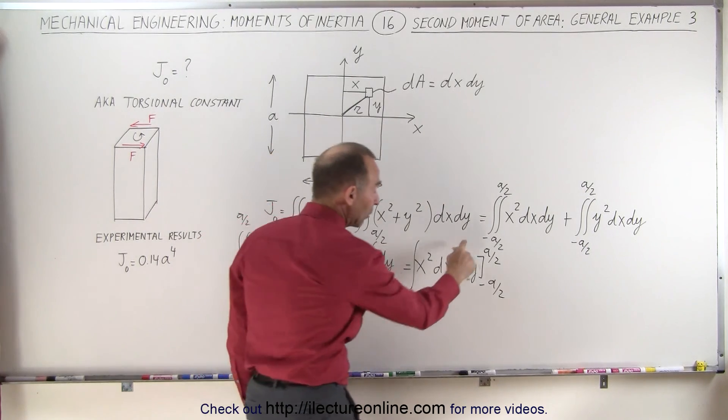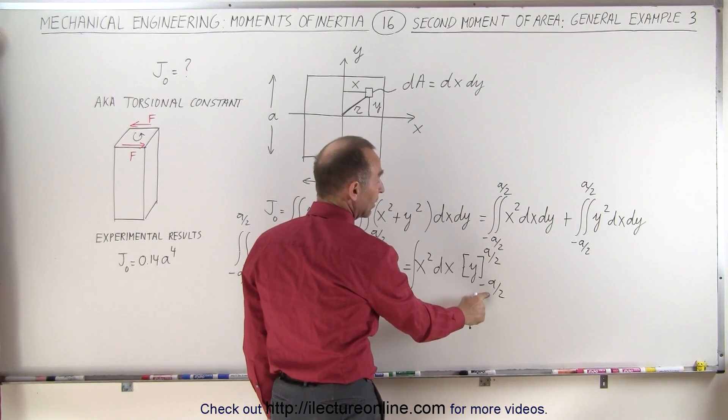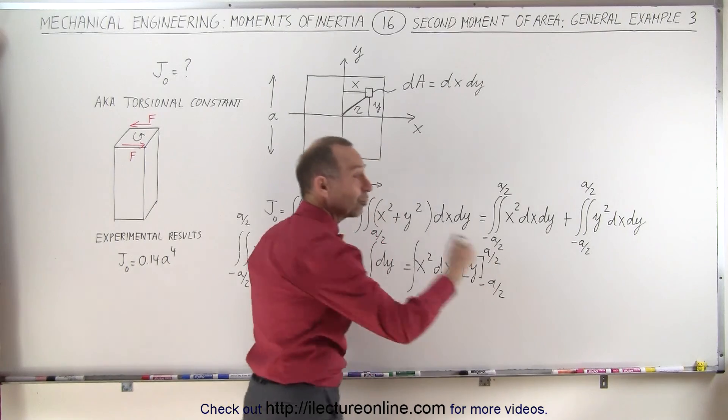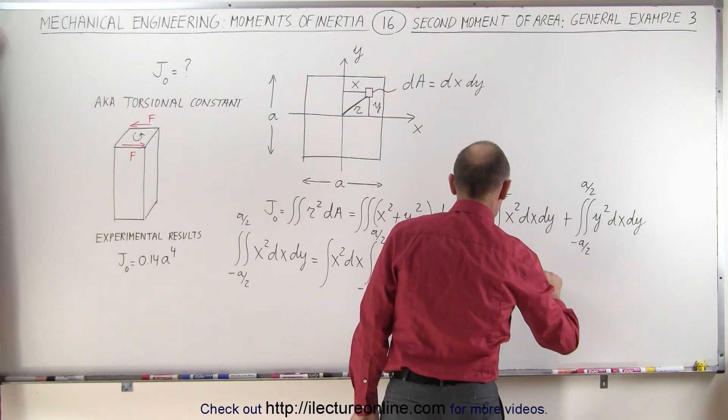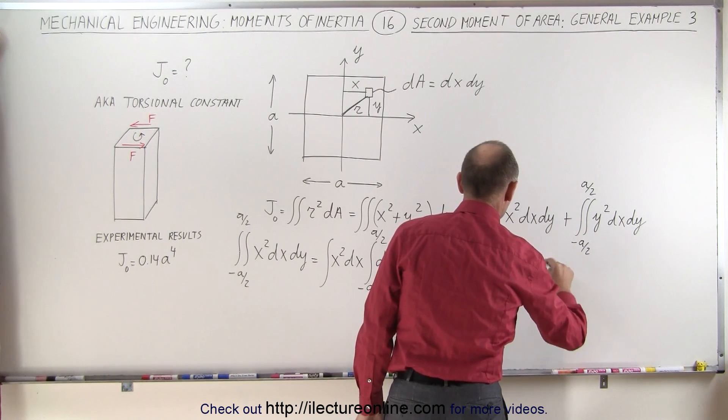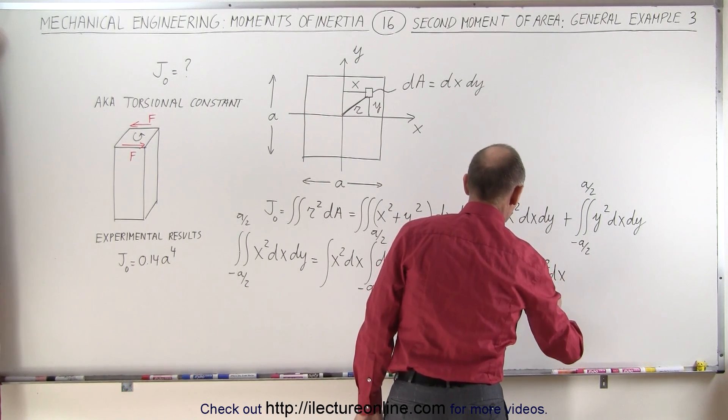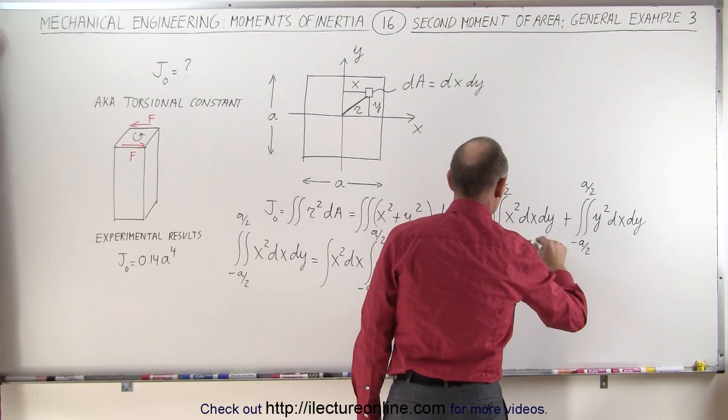When you plug in the upper limit, you get a over 2. When you plug in the lower limit, you get minus a over 2, but since you're subtracting, you're basically adding the 2, which gives you an a. So this can be written as a times the integral of x squared dx from minus a over 2 to positive a over 2.